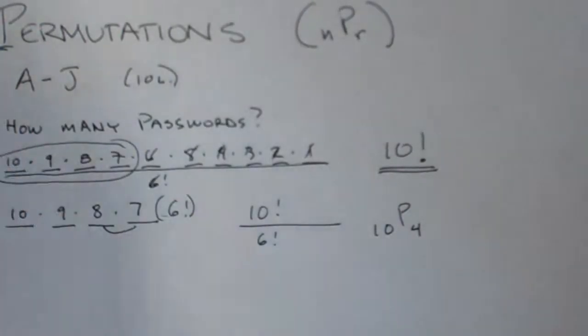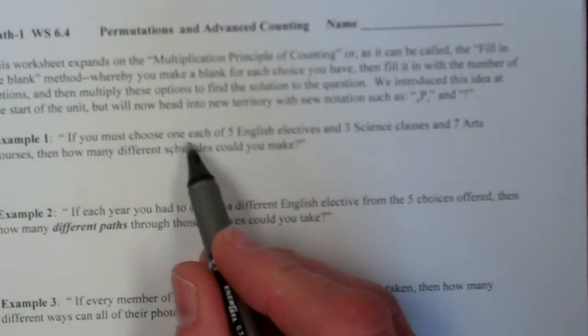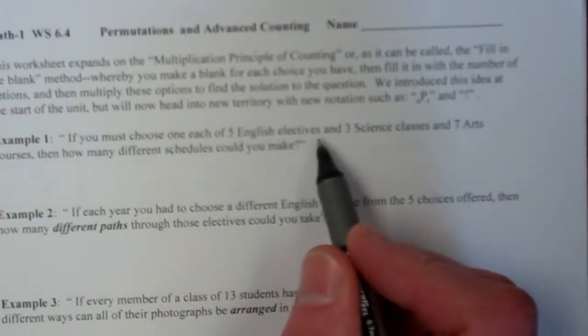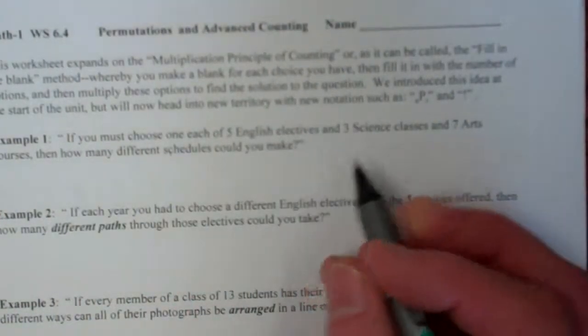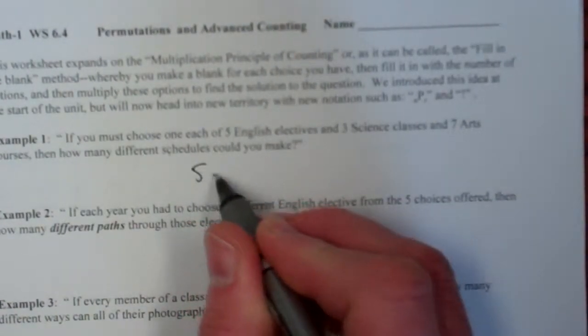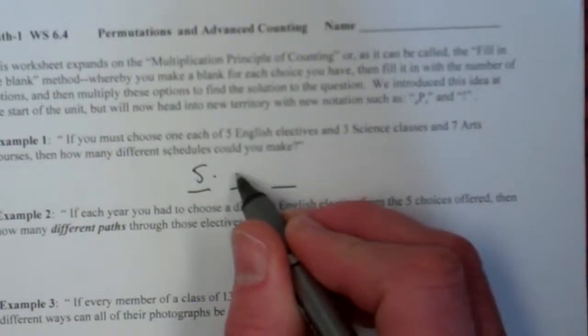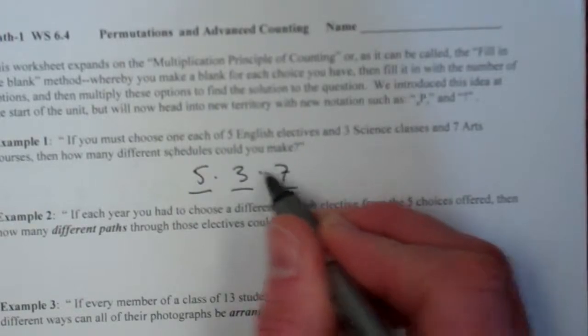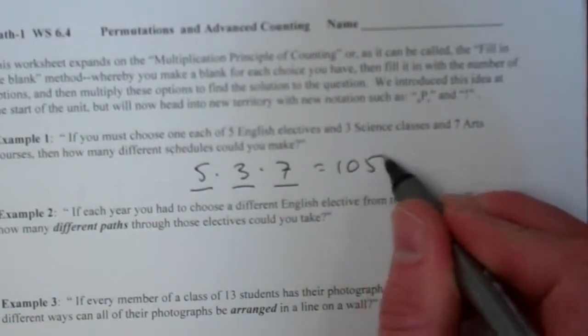So here's a little worksheet. Very straightforward. Example number one. If you must choose one of each of five English electives and three science classes and seven arts courses, then how many different schedules? Well, this is just the counting principle, the fill in the blank. We've got three blanks, one for each of these. Five, and then three, and then seven. So that's twenty-one times five. That would equal a hundred and five.